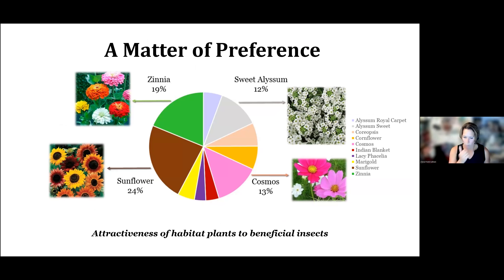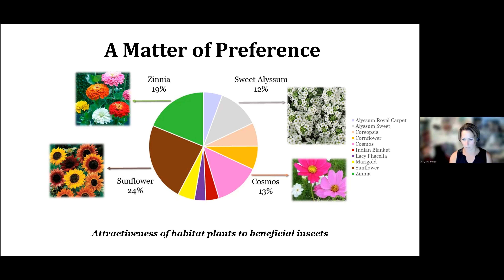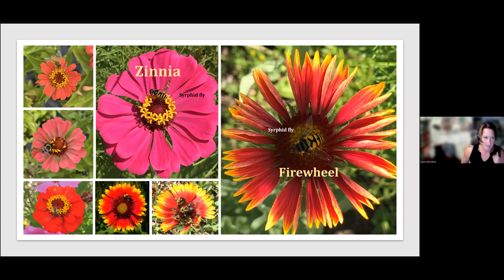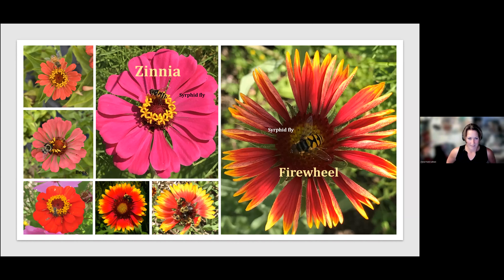Of the annuals we tested, sunflowers, zinnias, alyssum, and cosmos seem to be the most attractive. However, beneficials were observed to visit all the plants we had tested. Here are some pictures of bees and syrphid flies that like to visit the firewheel or zinnias — you can tell the yellow and reddish colors seem to be really attractive to those.